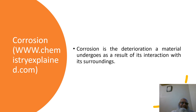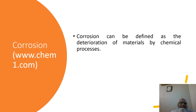This definition is taken from ChemistryExplained.com: corrosion is the deterioration a material undergoes as a result of its interaction with its surroundings. This definition is taken from WebChem1.com, that states corrosion can be defined as the deterioration of materials by chemical processes.